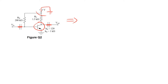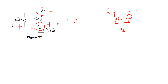For the transistor, it has three terminals: base, collector, and emitter. We will draw the H-parameter model — this is our base, this is collector, and this is emitter. Between base and emitter, it's replaced by H-ie. From collector to emitter, it's replaced by a current source with a value of H-FE times I-B. Note that there are currents I-B and I-C going into the base and collector terminals respectively.